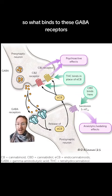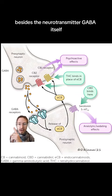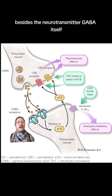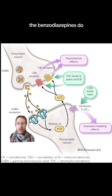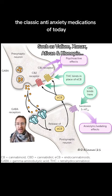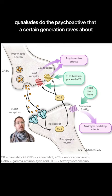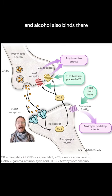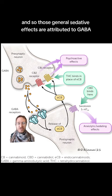So what binds to these GABA receptors, besides the neurotransmitter GABA itself? The benzodiazepines do — the classic anti-anxiety medications of today. Quaaludes do, the psychoactive that a certain generation raves about. And alcohol also binds there. Those general sedative effects are attributed to GABA.